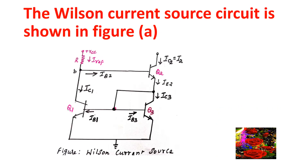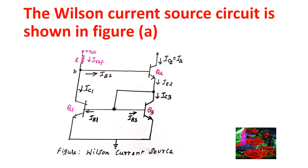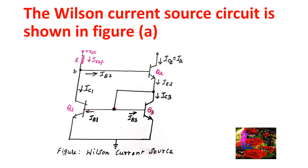The Wilson current source circuit is shown in figure A. In this Wilson current source, we have three transistors. Transistors Q1 and Q3 are connected through the base, and the emitter of transistor Q2 is connected to the base of transistors Q1 and Q3.